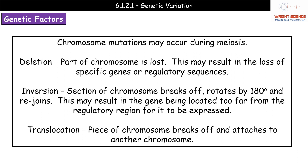Moving on to a new A-level idea: we can have mutations within the chromosome itself. It's not just a change in the base sequence of DNA; there can also be alterations to chromosomes during meiosis. The first type is deletion — as the name suggests, part of the chromosome is lost. Whatever genes were on that section are gone, or certain regulatory sequences may be lost, meaning you've either lost a gene completely or lost the ability to regulate a gene that's still present.